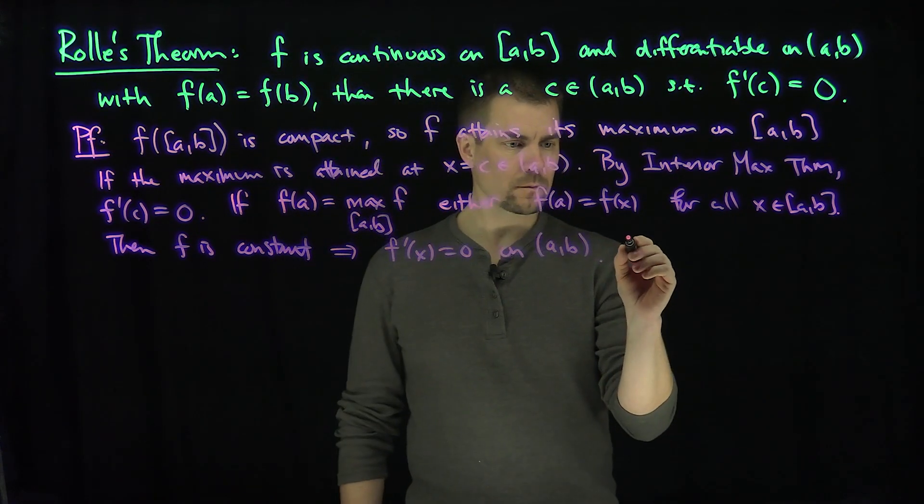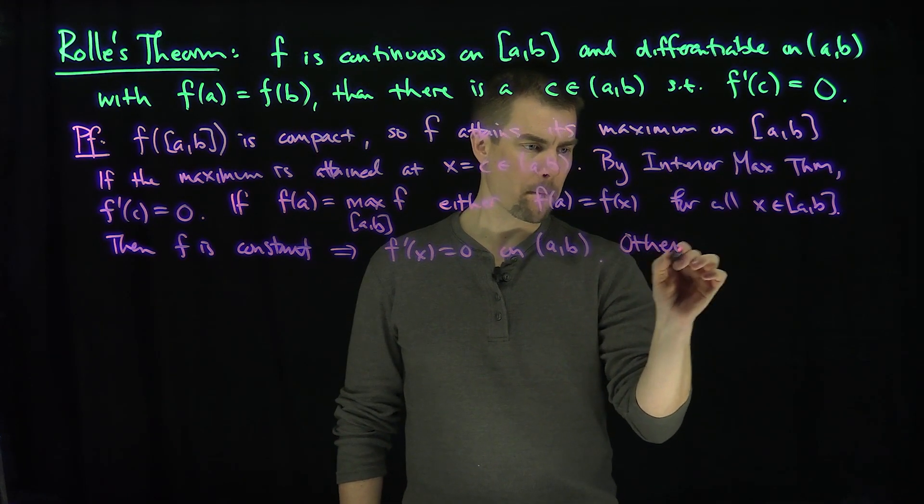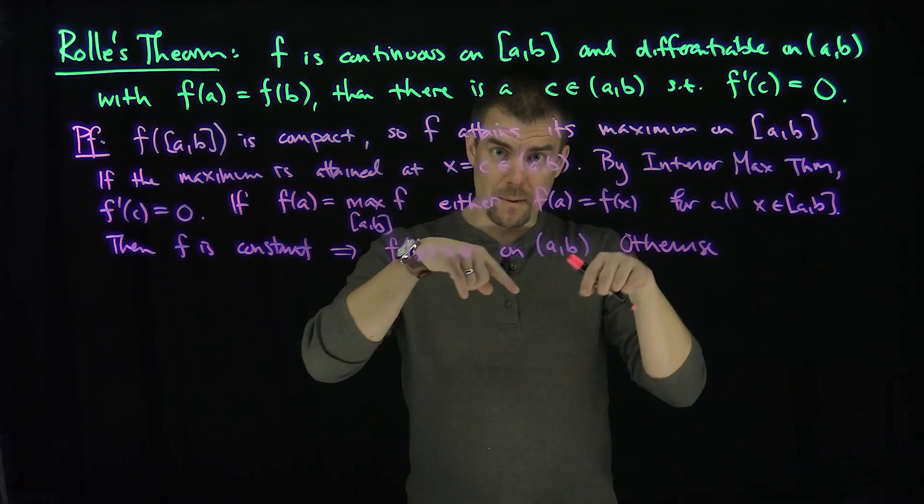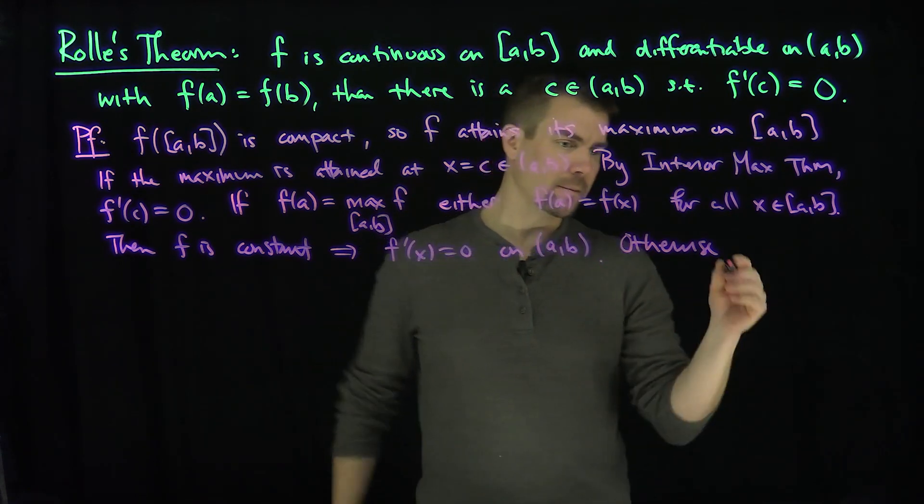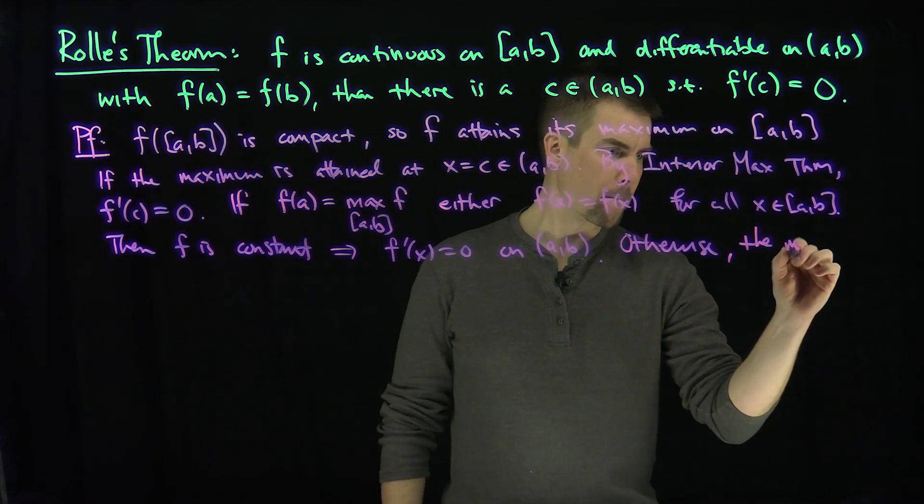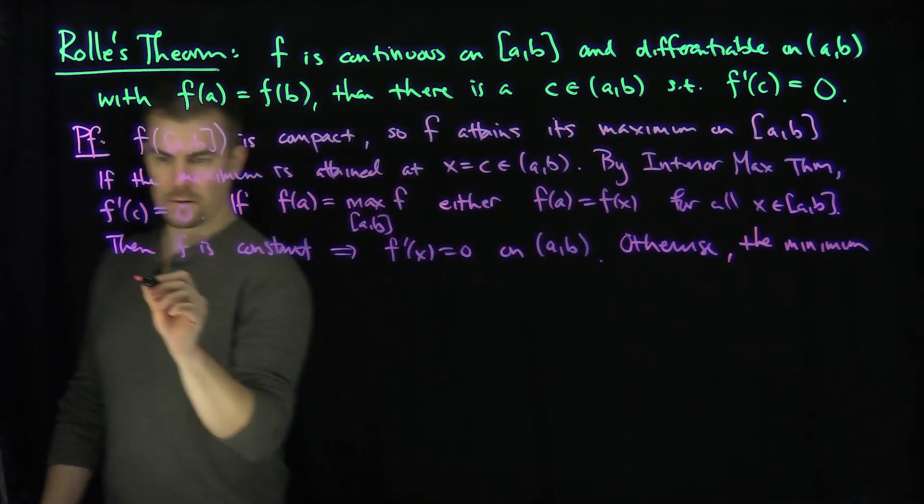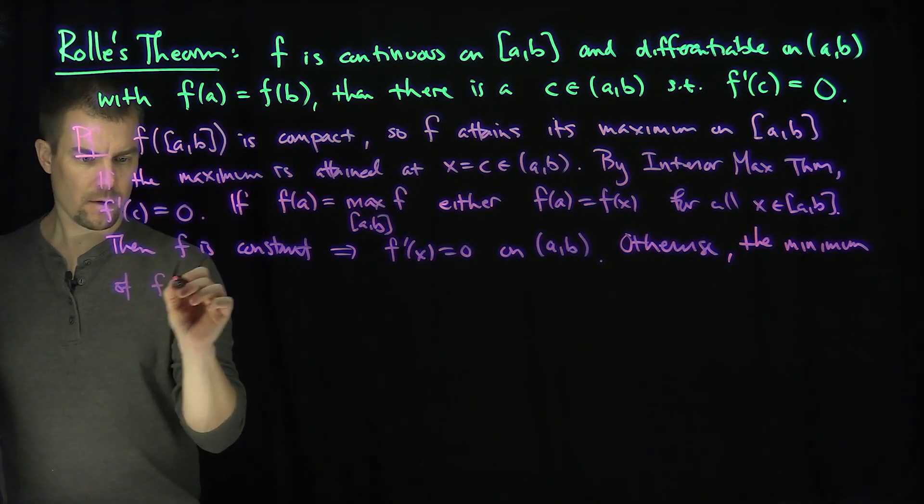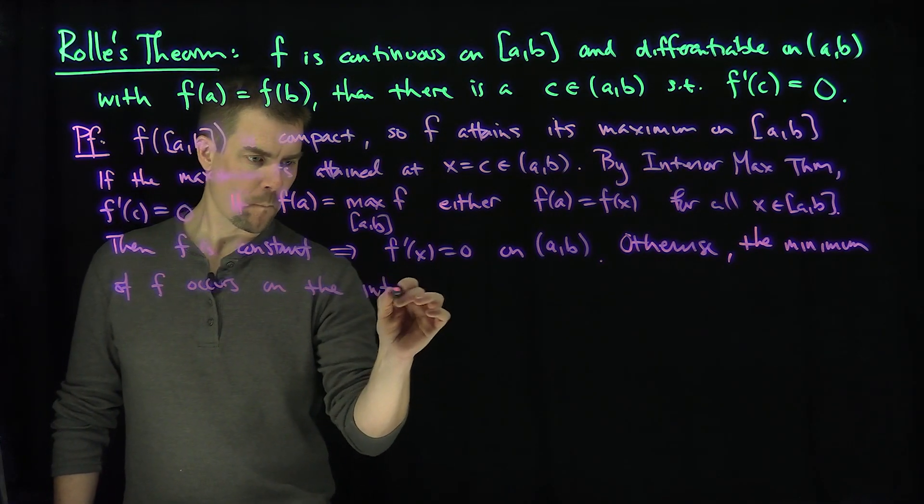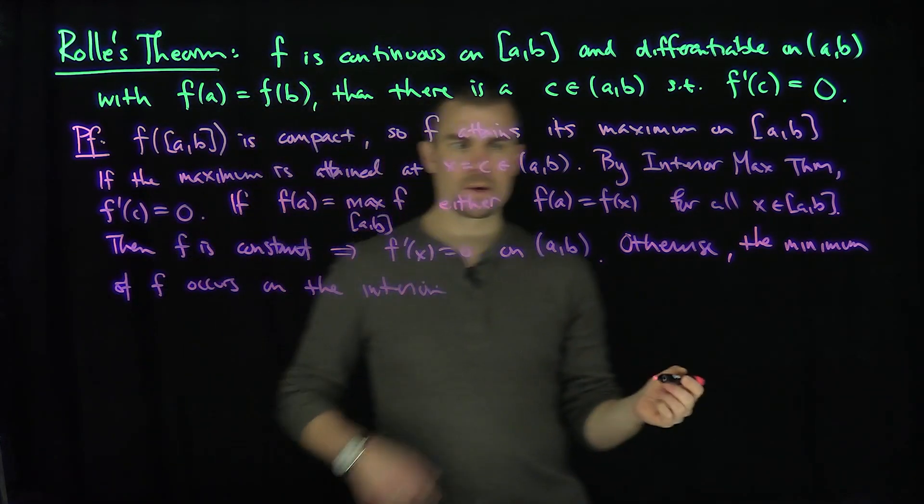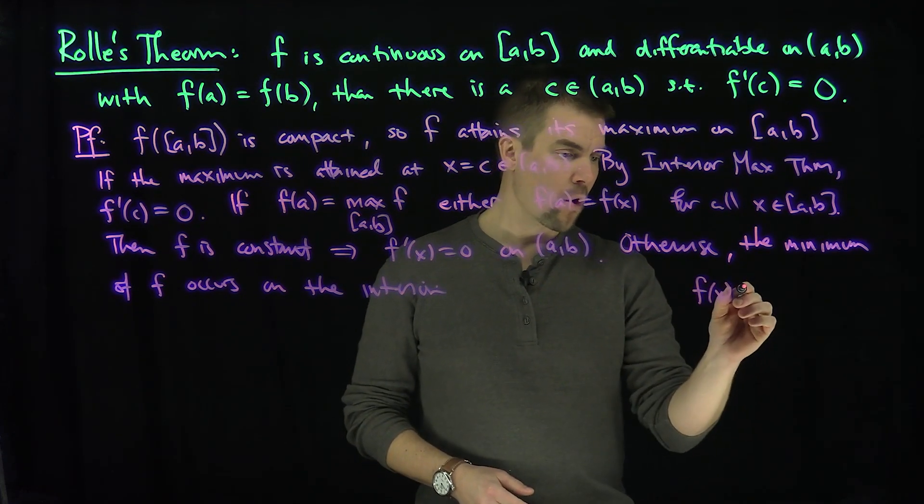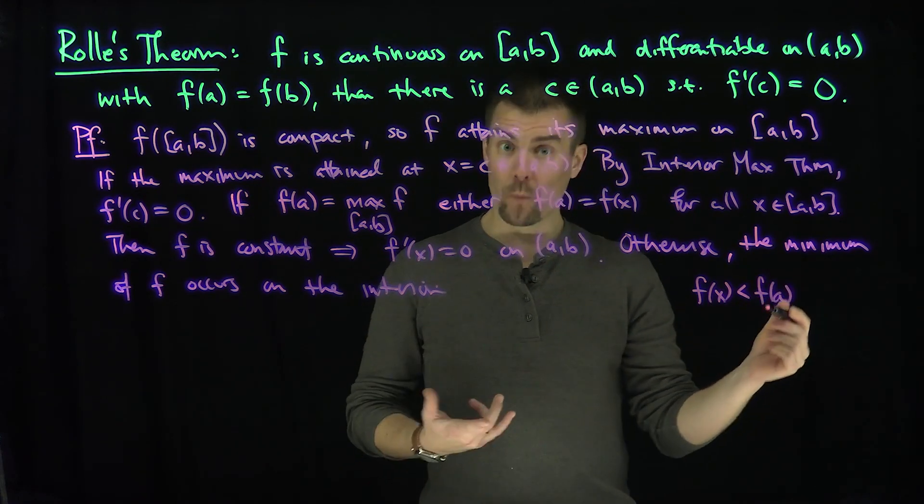Or otherwise, if f(a) is not equal to f(x), that says that there's a minimum point in between a and b. Otherwise, the minimum of f occurs on the interior. Indeed, because if f(a) is not equal to f(x), that says that f(x), since f(a) is the maximum, will be less than f(a) on the interval for x between a and b.